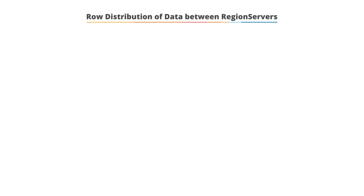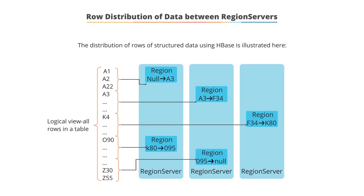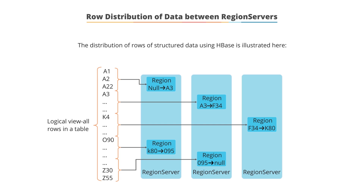Row distribution of data between region servers. The image describes the distribution of rows in a structured database using HBase, showing how the data is sliced and maintained in individual region servers depending on the requirement of the user. This ensures availability of data for a specific user. With data A1 through Z55, some data is split based on the index value — for example, null to A3 is in the first region server, A3 to F34 is stored in the second region server, and so on.